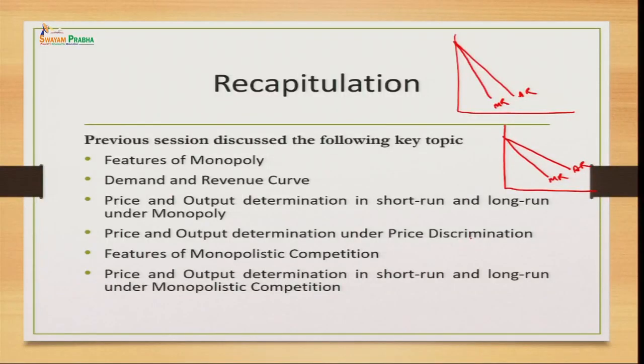We also talked about price discrimination — the art of selling the same commodity to different people at different prices. For this, specific conditions must be met: a person must have control over the supply of the market, be capable of dividing the market into two or more sub-markets with different price elasticities, and no one from the low price market should be able to buy and resell in the other market. If that happens, the monopolist loses control over supply and may not be able to discriminate among prices.